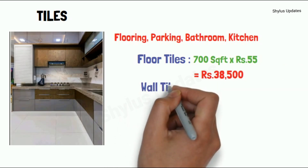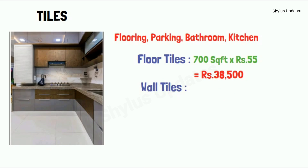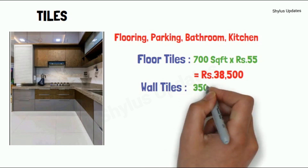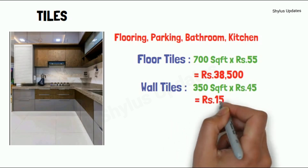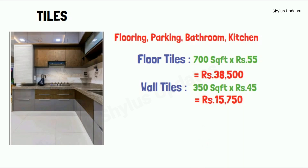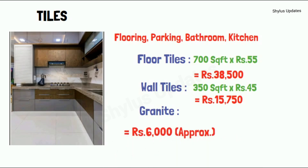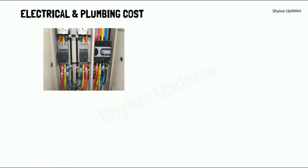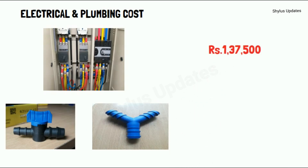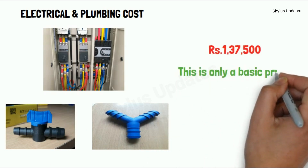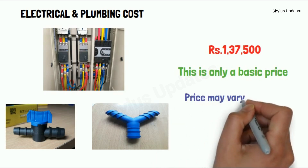Wall tiles are required for 350 square feet. The current market rate of wall tiles is Rs. 45. When you multiply 350 into Rs. 45, you get Rs. 15,750. Granite approximate cost is Rs. 6,000. Electrical and plumbing cost is Rs. 1,37,500. This is only a basic price; price may vary based on design and brand.